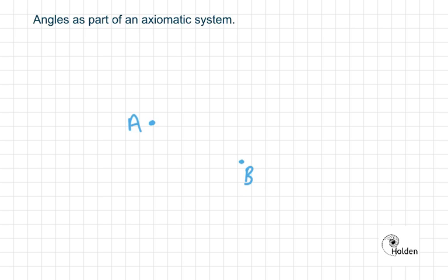Then we can start saying, what can we do? Well, we can join these two together with a line. So now we have line AB, and we have that description.